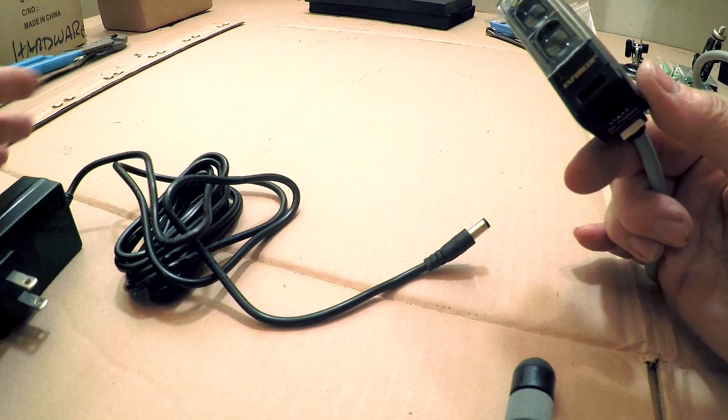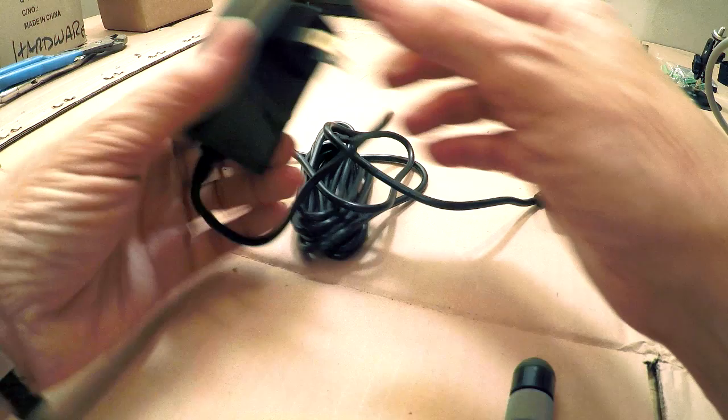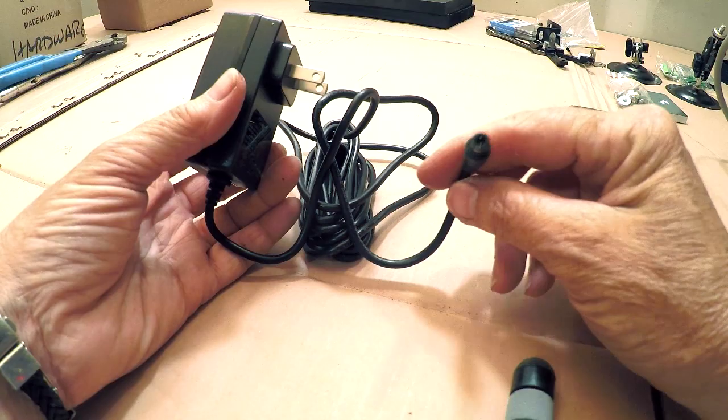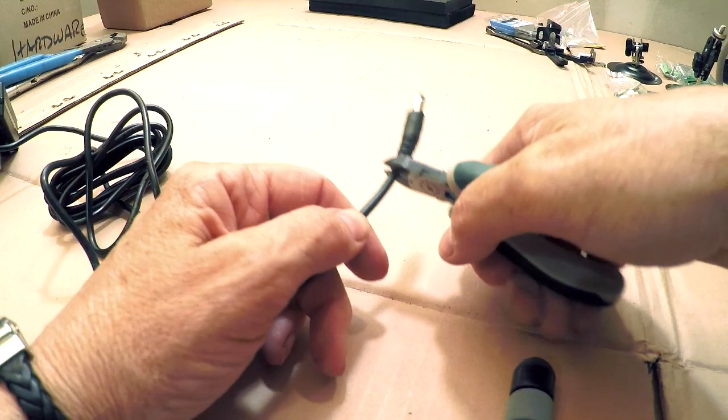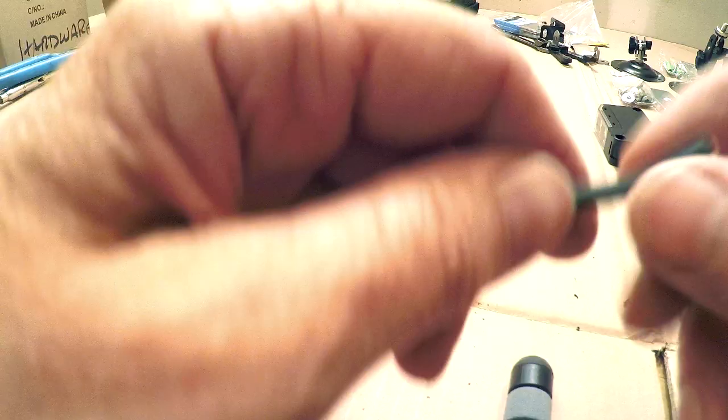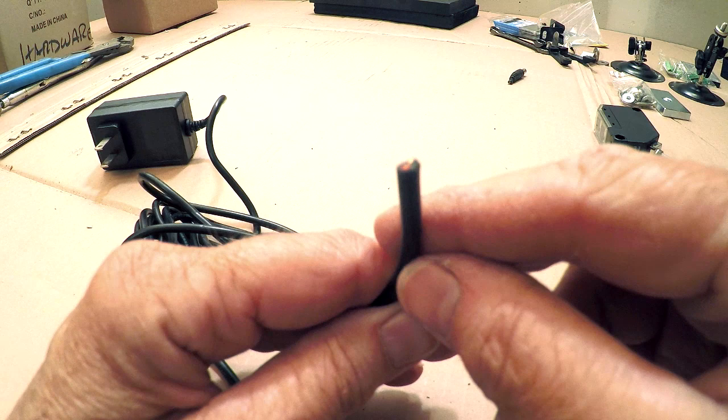The first thing we're going to do so that we can test this sensor is to get it power. Hopefully you also have purchased this AC adapter. This is a 12 volt AC adapter that we are going to put connectors on. Right now it has this round plug. We are just going to cut that off and put on our regular insulated terminals. So just cut it off at the end.